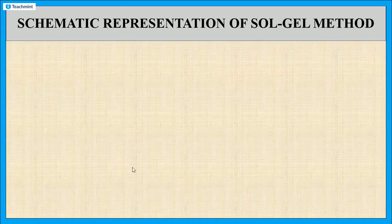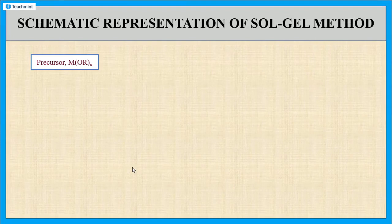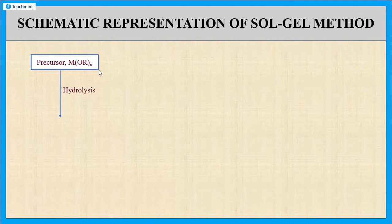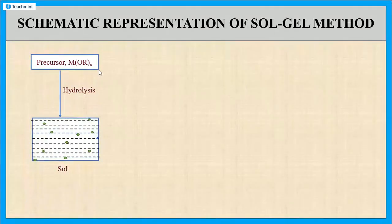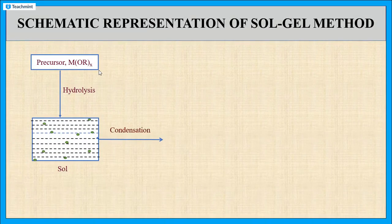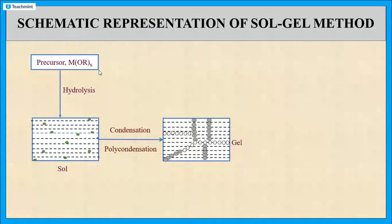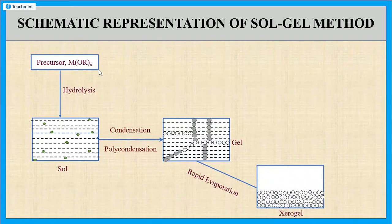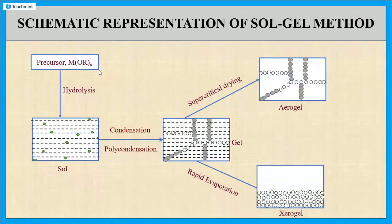Now let us see the diagrammatic representation of the Sol-gel method. First, we take the precursor M(OR)x. When the precursor undergoes hydrolysis, the formation of Sol takes place. Then, self-condensation of Sol followed by poly-condensation produces the gel. Rapid evaporation of the gel produces xerogel. If the gel is dried under supercritical conditions, then the obtained product is known as aerogel.